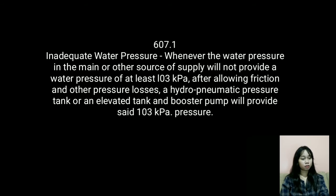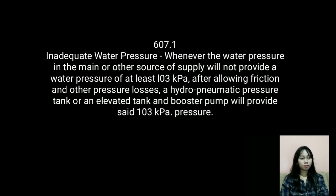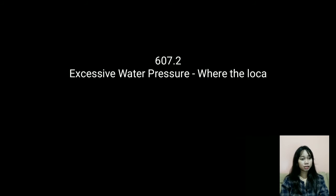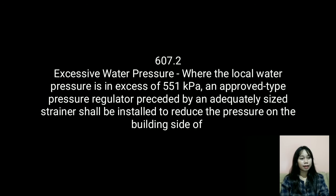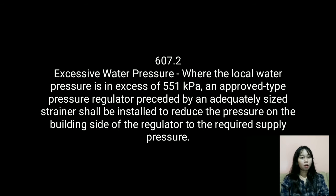In Section 607.1, regarding inadequate water pressure — whenever the water pressure in the main or other source of supply will not provide a water pressure of at least 103 kPa after allowing for friction and other pressure losses, a hydropneumatic pressure tank, or an elevated tank and booster pump, shall be provided to supply the required 103 kPa pressure.